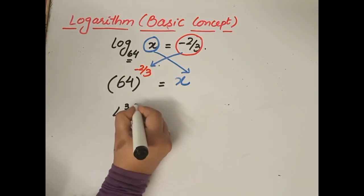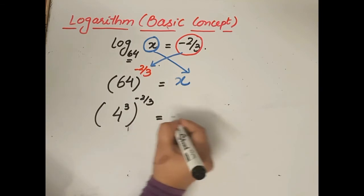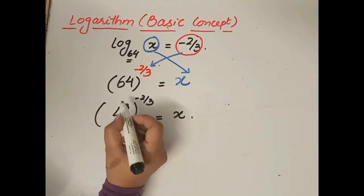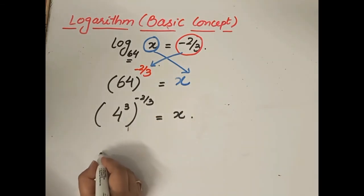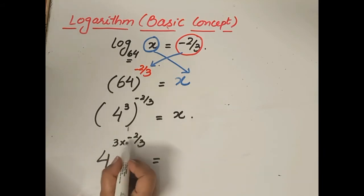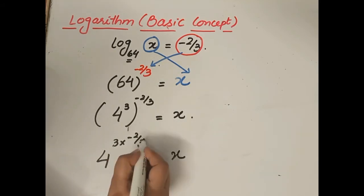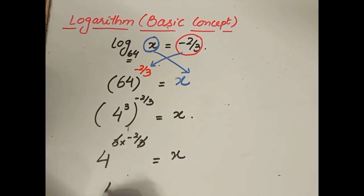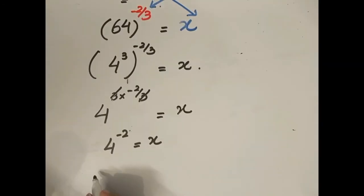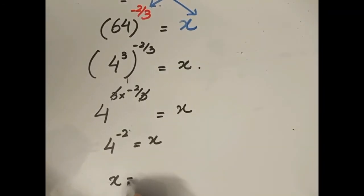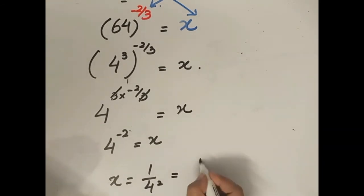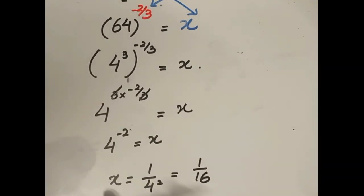4 cubed is 64, raised to the power −2/3. These two powers are multiplied: 4 raised to the power 3 × (−2/3) = 4 raised to the power −2. This gives x = 1 over 4 squared, which equals 1/16. So the unknown value of x is 1/16.